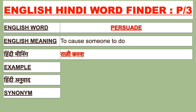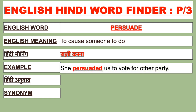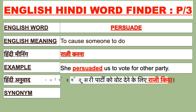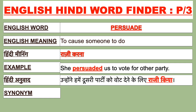For example: She persuaded us to vote for the other party. Isi Hindi mein bolenge: Unhone humein doosri party ko vote dene ke liye raji kiya.